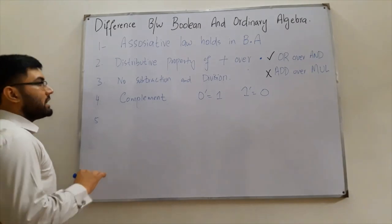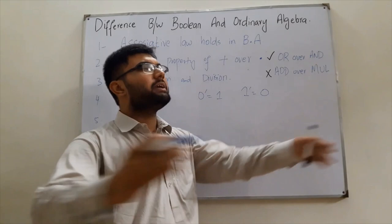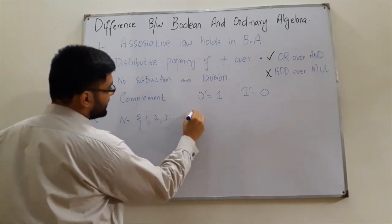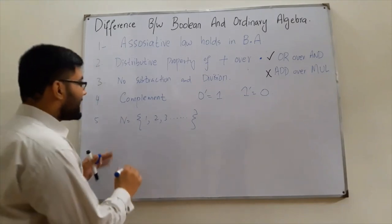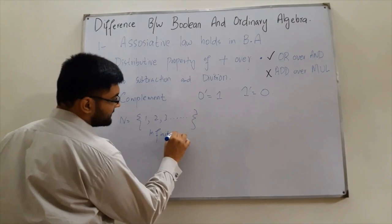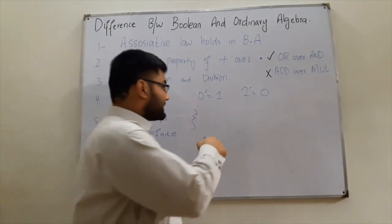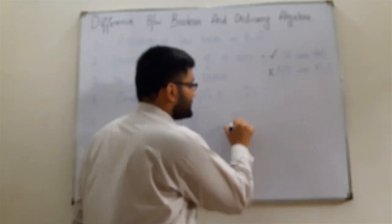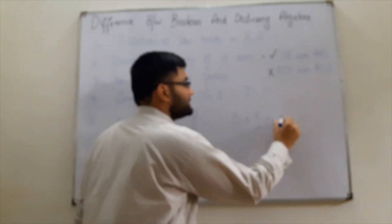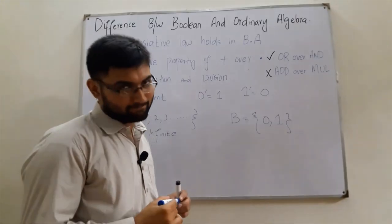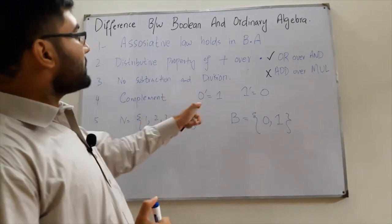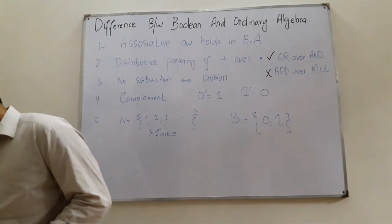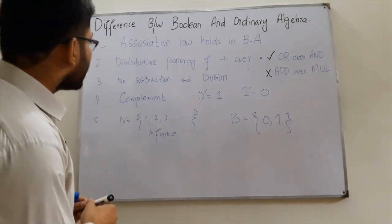The fifth and last point is that in ordinary algebra we deal with sets of infinite values — for example, the set of natural numbers goes on and on. But in boolean algebra, especially the two-valued boolean algebra, we have a set B with only two defined values: 0 and 1. So those are the five differences between boolean and ordinary algebra.